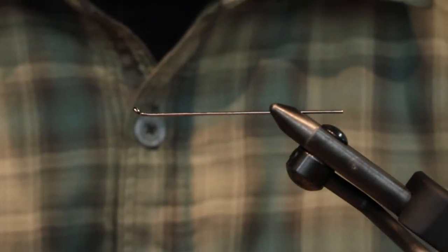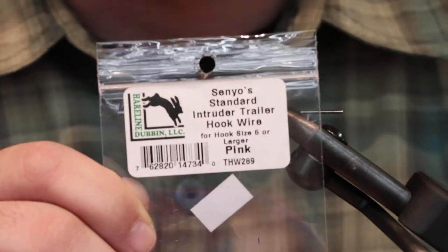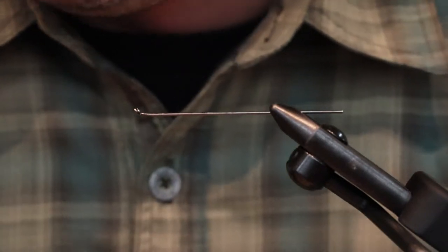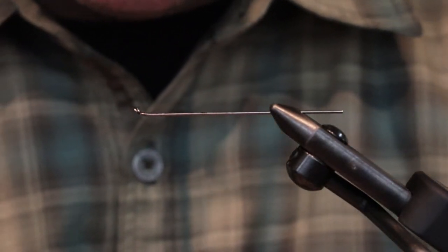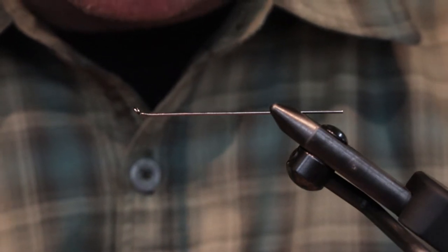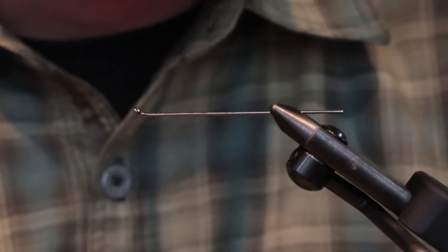Alright, we're tying on intruder wire here. We're going to use Senyos intruder wire. There are many different kinds of hook connections for articulated flies, but I'm just going to be straight with you: the Senyos is the best stuff.